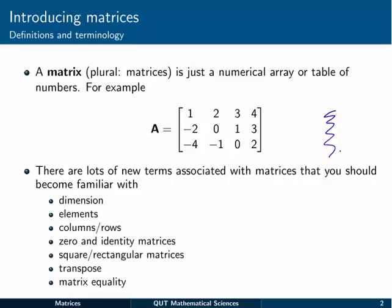Just like we can see here, where we have the matrix A written in bold, equal to this table of numbers 1, 2, 3, 4, minus 2, 0, and so on.